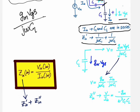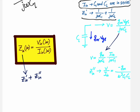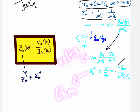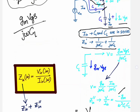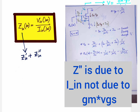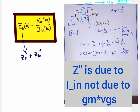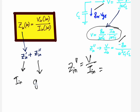Now replacing vgs with i_in/(jωC1), because of gm·vgs flowing through CL, you get an additional voltage of gm·vgs divided by jωCL across CL. With respect to i_in, computing v/i_in, there are two contributions: one solely because of i_in and one because of gm·vgs.